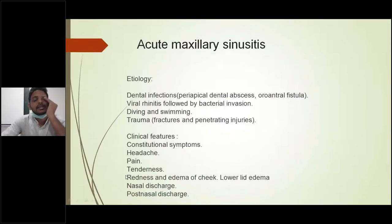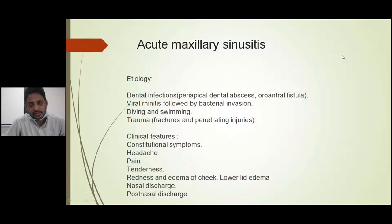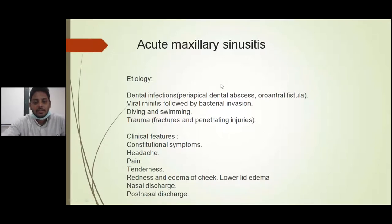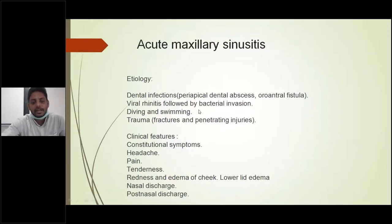ARS can be categorized into four types based on which sinus is affected: maxillary, frontal, ethmoid, and sphenoid. Coming to acute maxillary sinusitis — this is the most commonly affected sinus. The most common etiology is dental infections, including periapical dental abscess, tooth extraction, or any ascending infection. Other causes include contamination of nasal mucosa from diving or swimming in contaminated waters, and trauma or facial fractures including penetrating fractures.